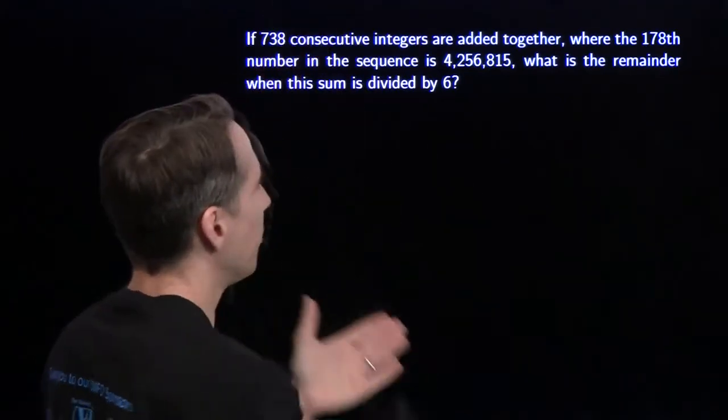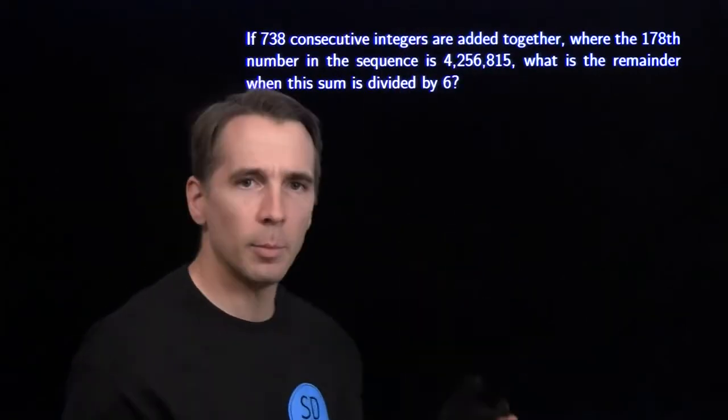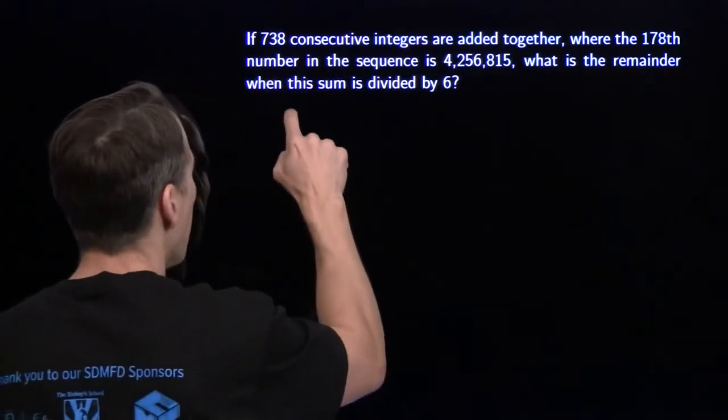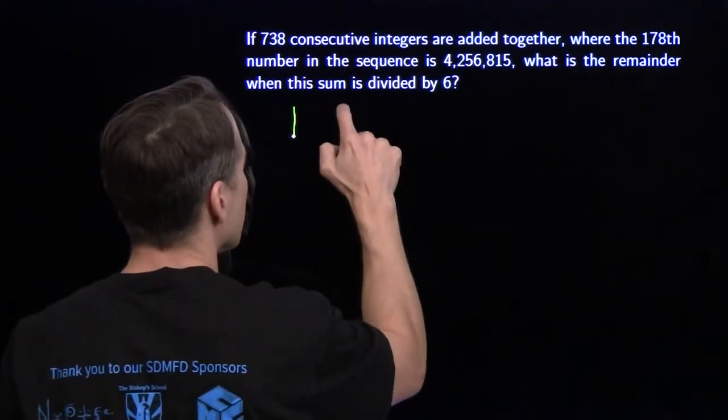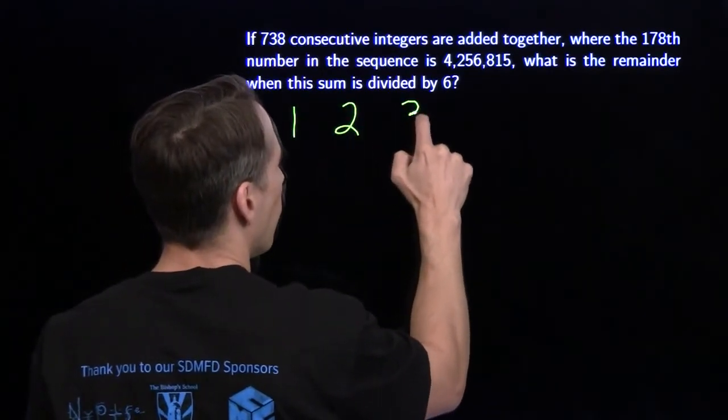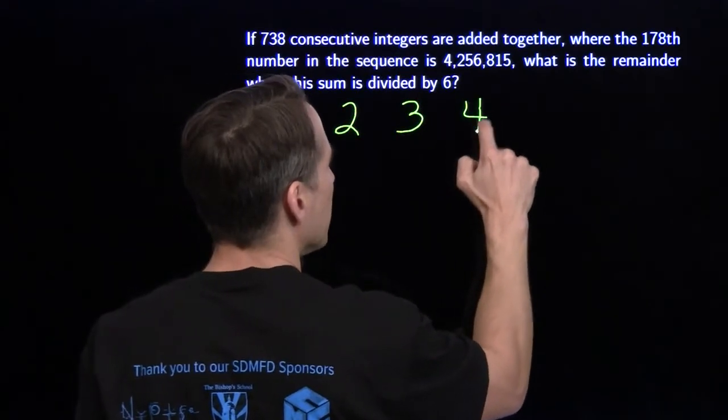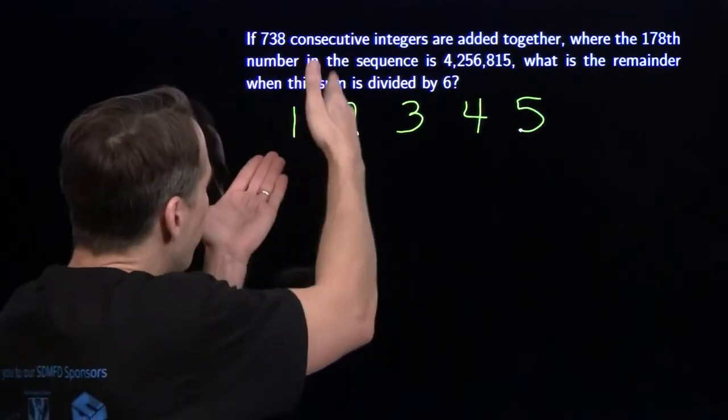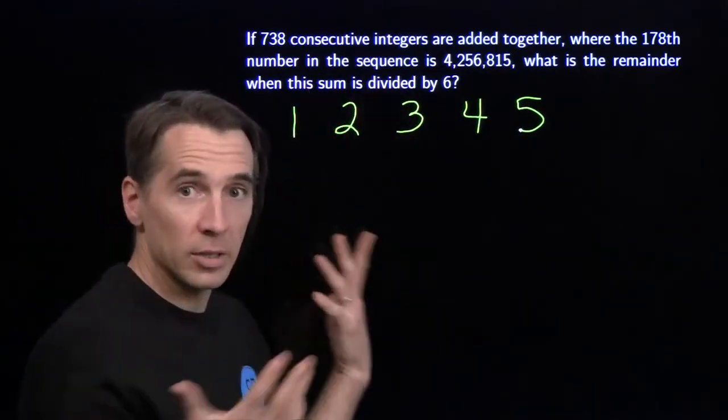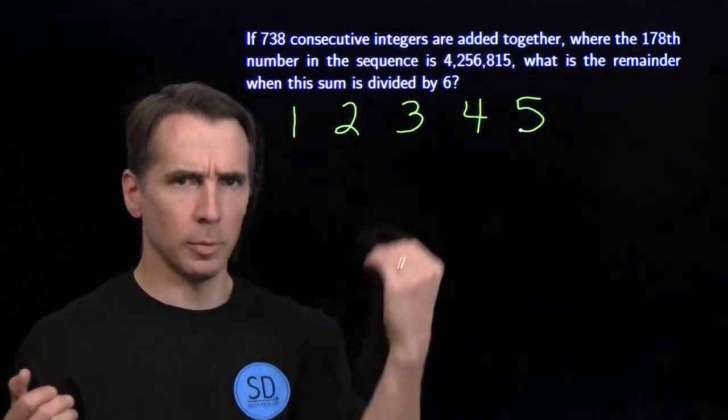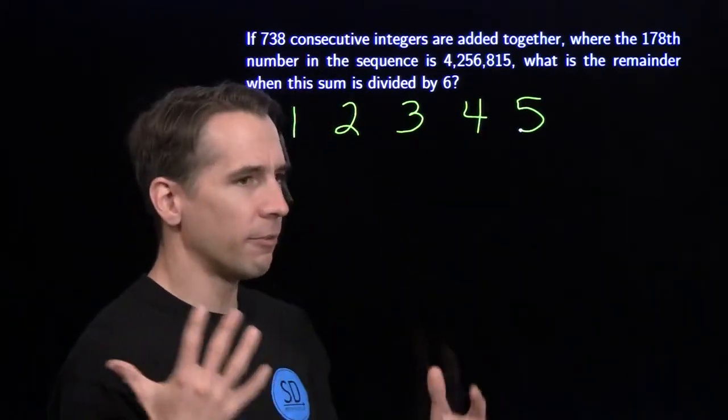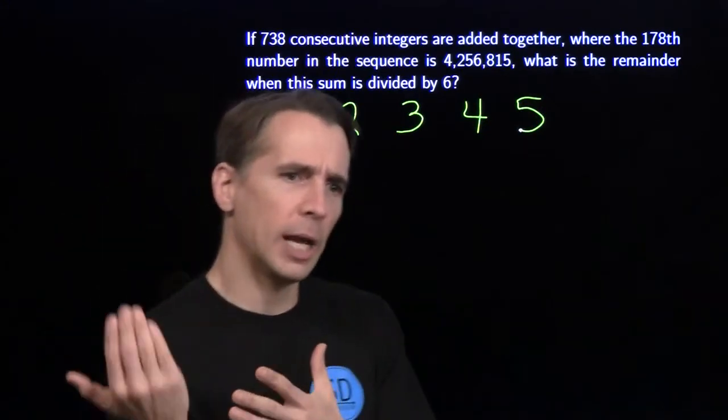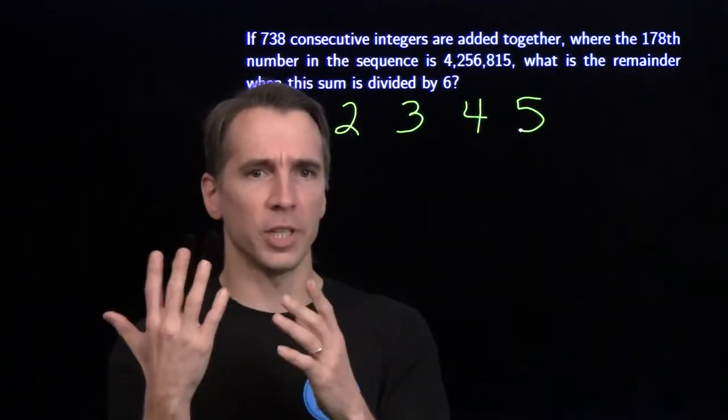Instead of worrying about 738, 178, or this ridiculous number, I'm just going to start from 1. Start from 1. What comes after 1 is 2, 3, 4. I'm going to take consecutive numbers starting from 1 and think about what happens when I add these up and then divide by 6. What's the remainder? As I add them up, 1 and 2 and 3, well, that gives me 6. Well, that remainder makes me back to 0. I add 4, well, now I have a remainder of 4. I add 5. 4 and 5 is 9, gives me a remainder of 3.